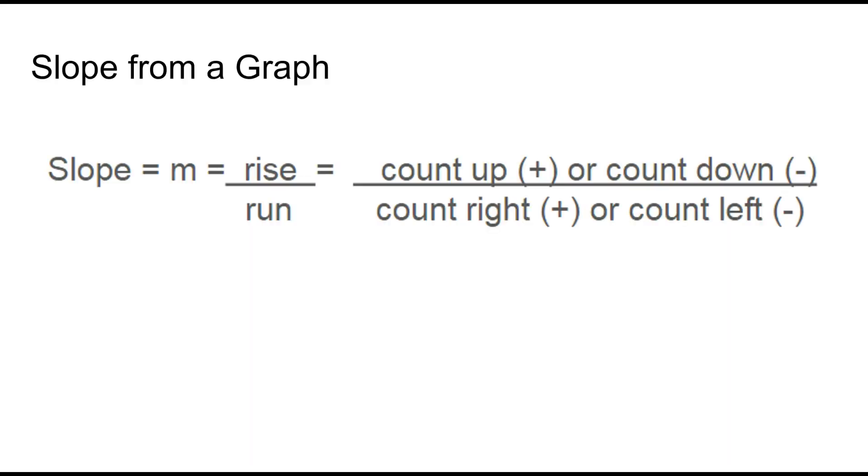How could we determine a slope when we're given a graph? When we are calculating slope from a graph we always use the letter M to represent slope and we're counting the rise over the run or how much we go up or down over how much we go right or left.